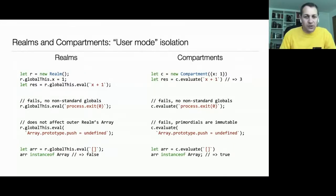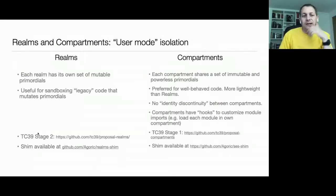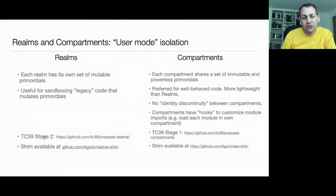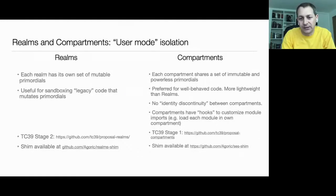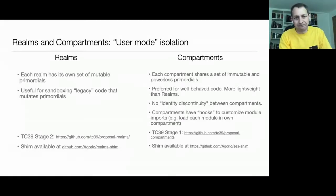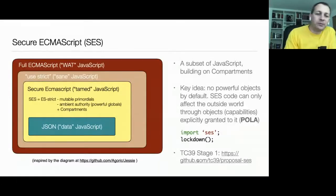TC39 has a staging process from stage zero to stage four to indicate how mature a proposal is. Realms are at stage two — they will get into JavaScript at some point, but the APIs might still change. Compartments are still stage one. The good news is that for both, there are shim libraries available at the URLs shown, so you can already use a shim implementing the standards API today.